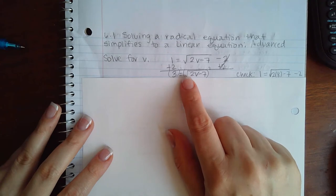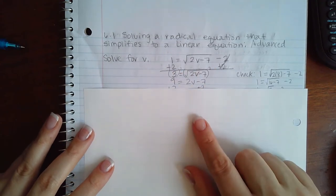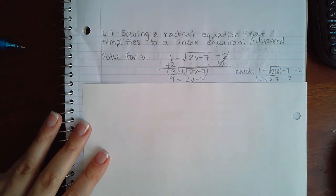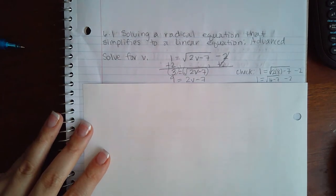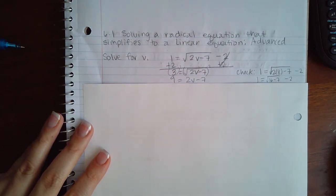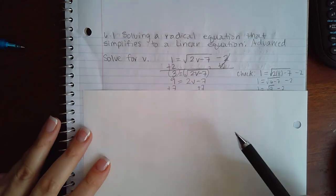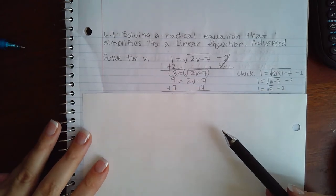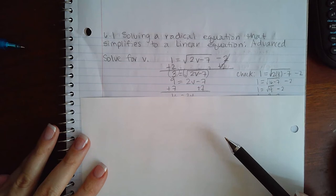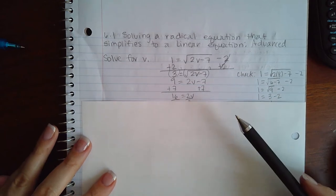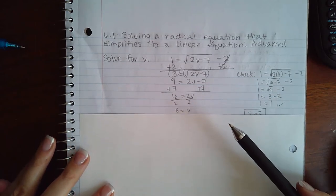This is a square root, so I used a square power on both sides, leaving me with 9 on the left-hand side and just the 2v minus 7 on the right-hand side. Then I added 7 to both sides to start solving for v, so I got 16 equals 2v.